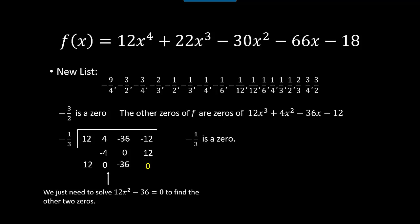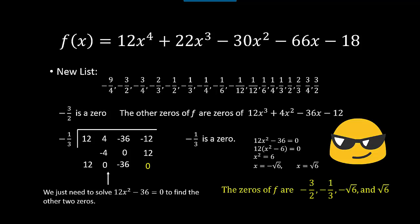Once it's a quadratic, we don't need to keep doing synthetic division — just solve it directly. Factoring out 12, we get x² = 6, which has two solutions: √6 and −√6. So all four zeros are: −3/2, −1/3, +√6, and −√6. The two rational zeros were on our original list of 32, while the two irrational zeros wouldn't have been on that list anyway.